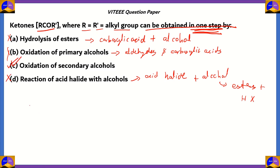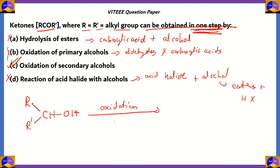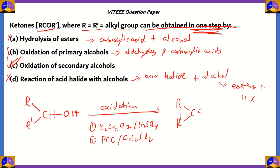The correct option is C — oxidation of secondary alcohols. If we look at a secondary alcohol, R–CH(OH)–R', when it undergoes oxidation with reagents such as K₂Cr₂O₇ and H₂SO₄, or PCC in CH₂Cl₂, you get ketones: R–C(=O)–R'. Ketones contain the carbonyl group present between two hydrocarbons. Therefore, option C — oxidation of secondary alcohols — is the correct answer.